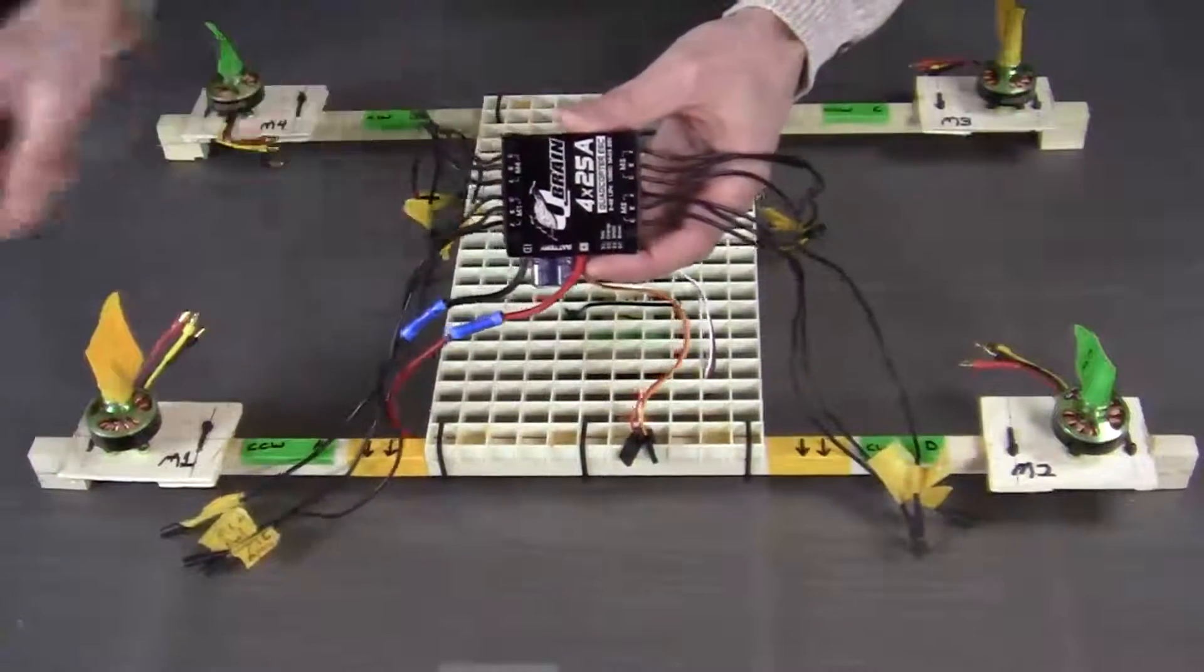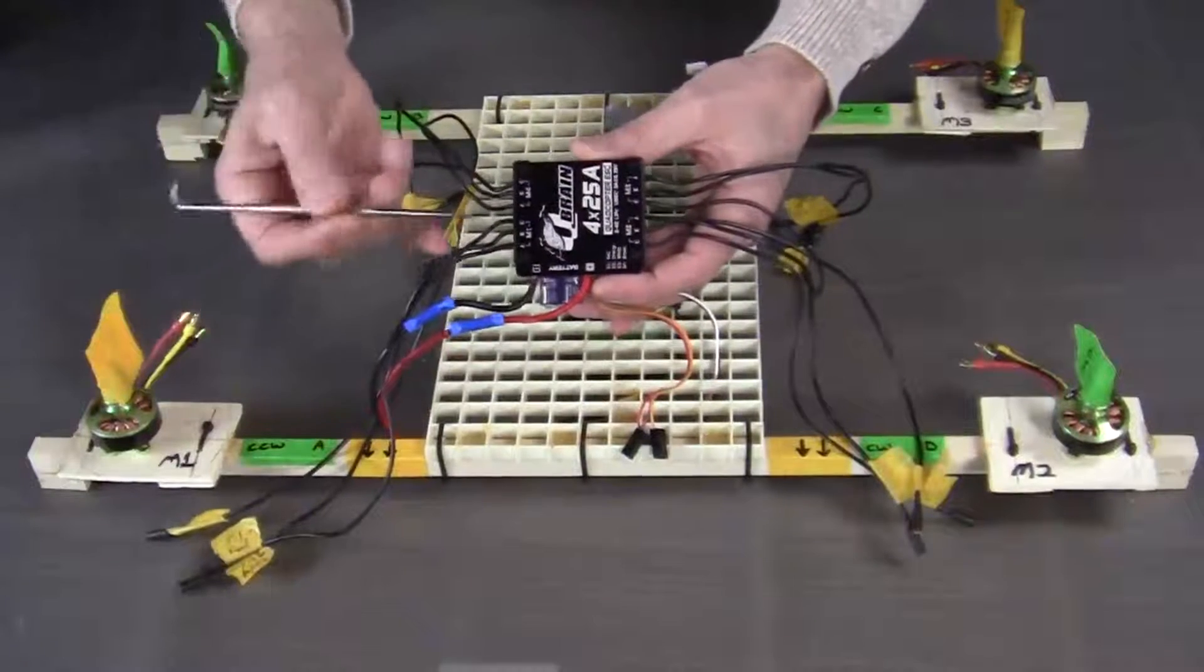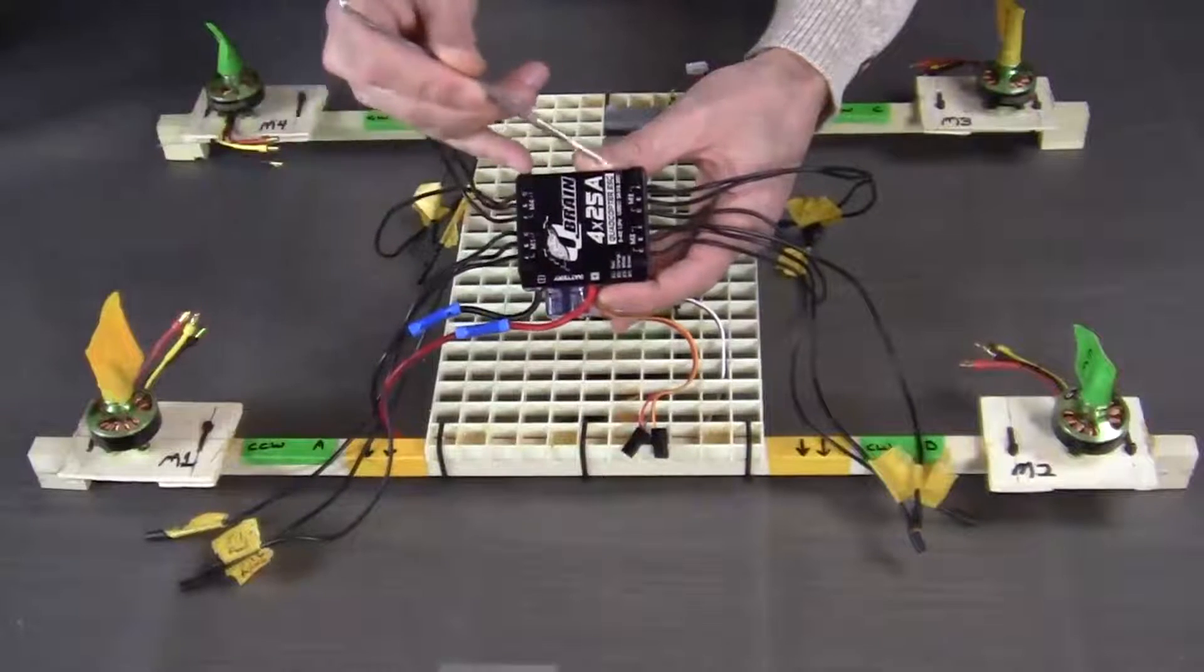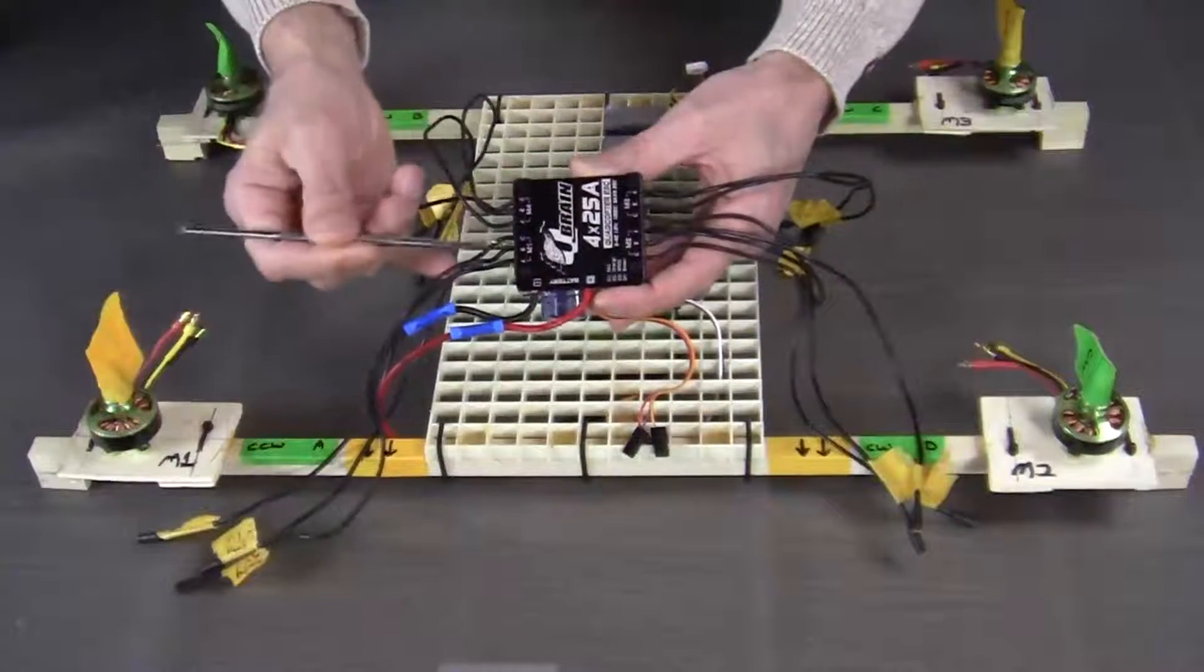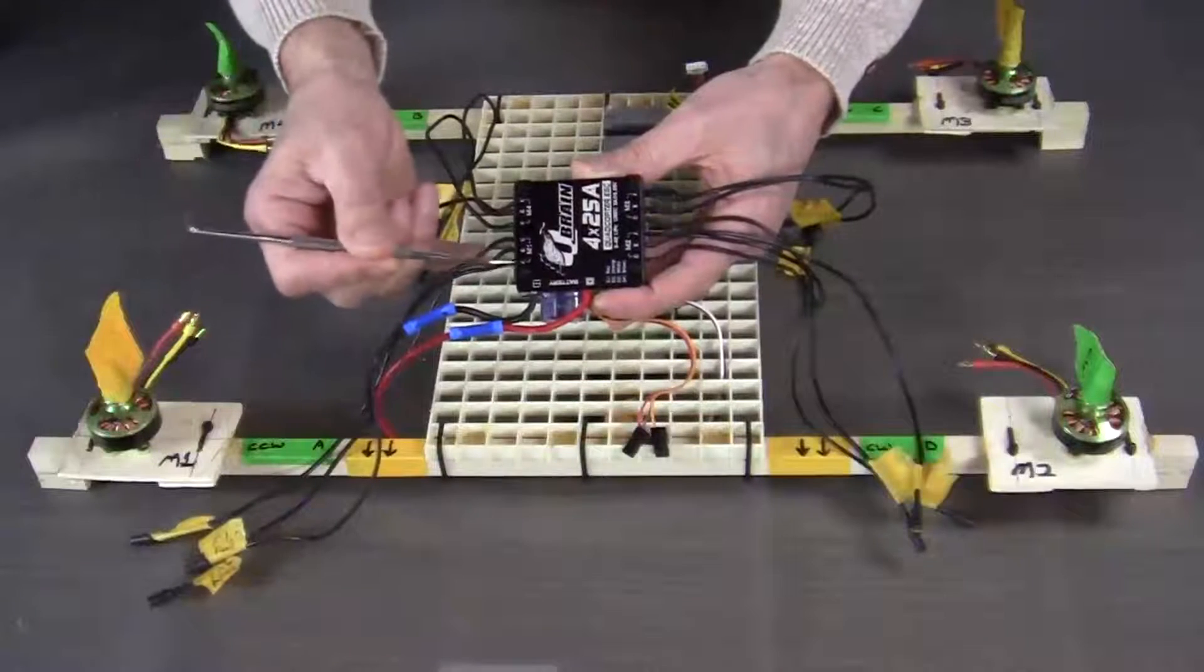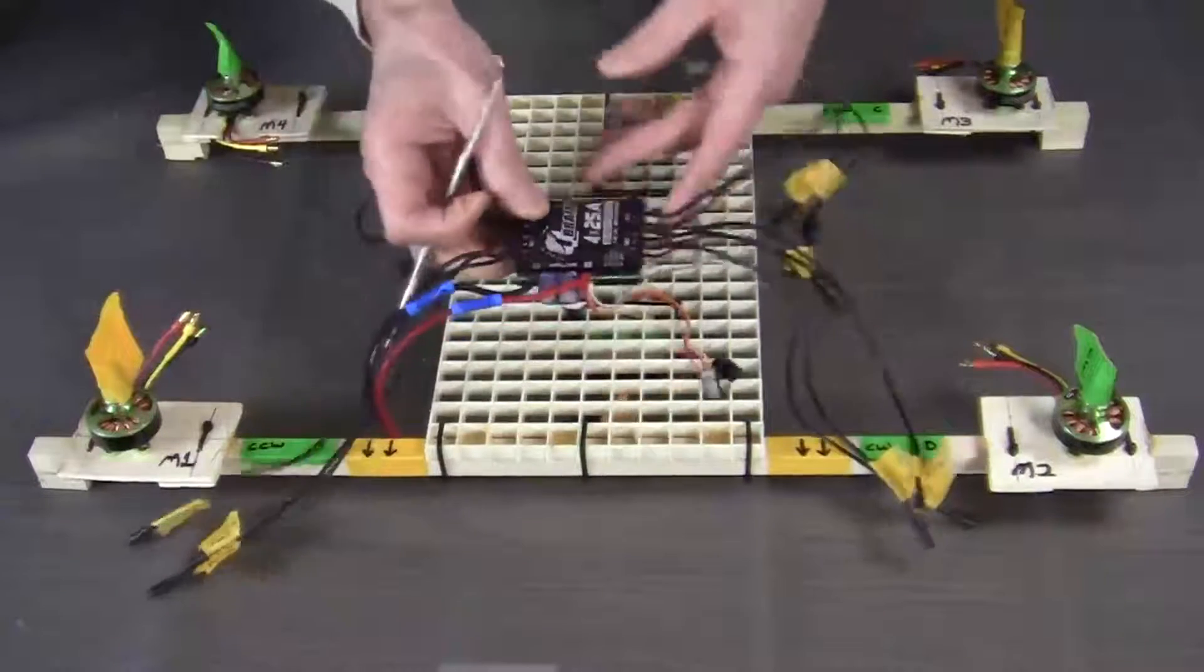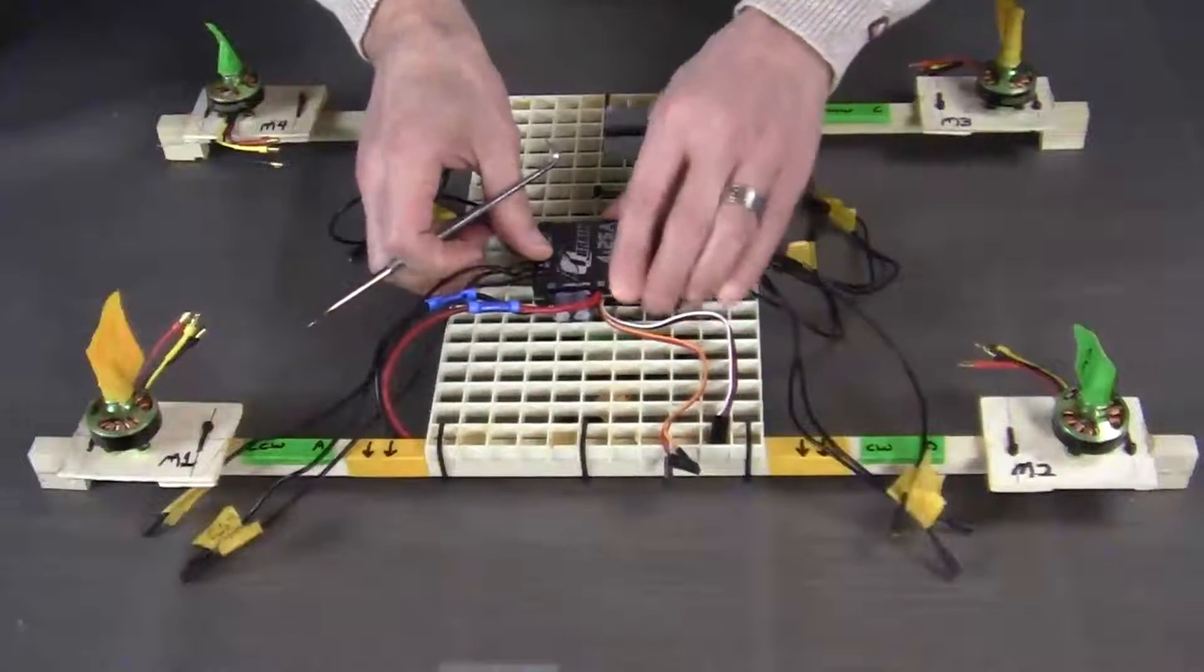The QBrain identifies each motor M1, M4, M3 and M2. In addition to that, each motor has three wire leads and they're identified A, B and C. So let's put that in position.